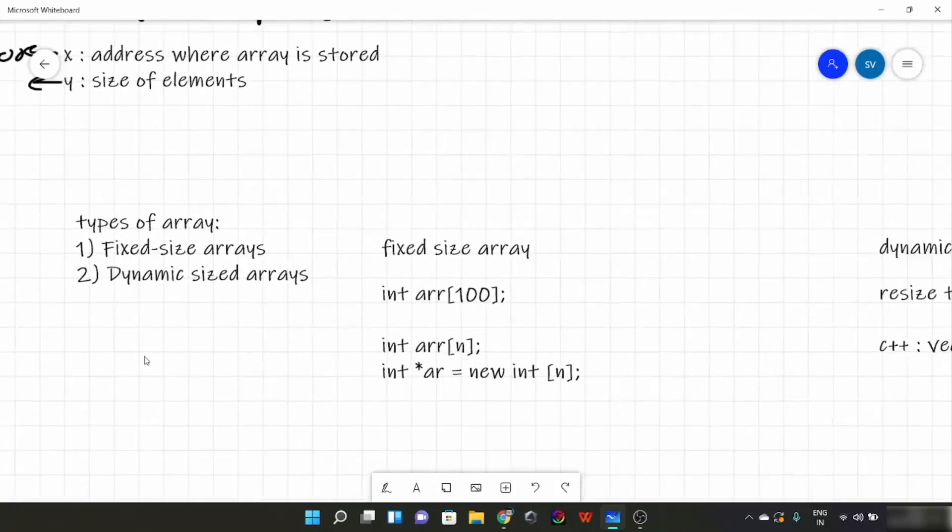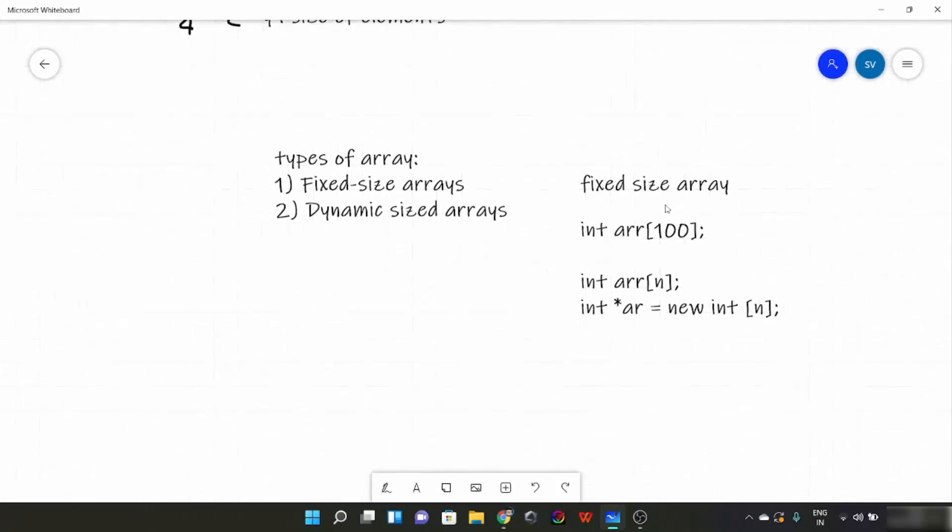So fixed-size arrays means that they don't allow any other items than the current size in which they are declared. Suppose here a fixed-size array is declared: int arr[100]. That means the size of this container is 100, like it can at most store 100 elements. If you want to add a 101st element, this will give you an error. Same goes for int arr[n].